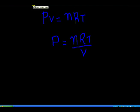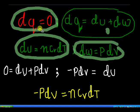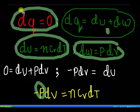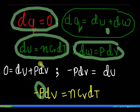We know that PV is equal to nRT, so P is equal to nRT by V. This is used to substitute this pressure right here — we are going to substitute nRT by V in this pressure quantity.